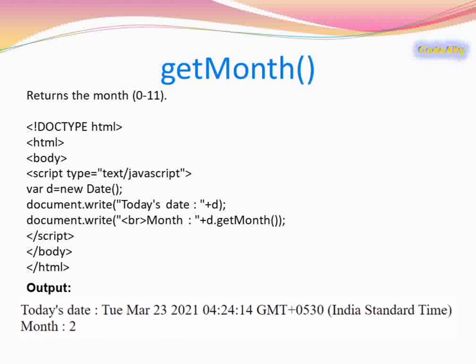The next method is getMonth(). It returns the month of the date in the range 0 to 11, where 0 represents January, 1 represents February, 2 represents March, and so on. When we apply this method to the date we get the month as 2 because it is March.